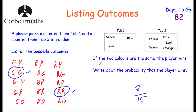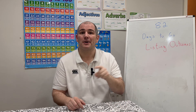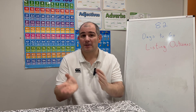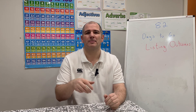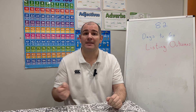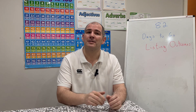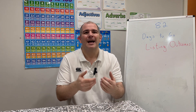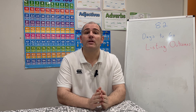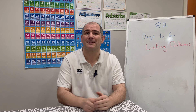In this video I've gone through listing outcomes and the importance of working through systematically — not randomly picking outcomes, but going through in a particular order. Practice questions are in the description below. It's an important topic to practice because the context is hard to predict — it might be coins being flipped, dice being rolled, or pizza toppings. By doing lots of practice questions you'll be confident, and it's a topic where you should be able to get full marks. Please like and subscribe to the YouTube channel — tomorrow will be 81 days to go. Cheers, bye!